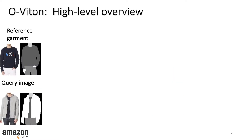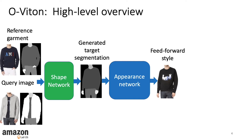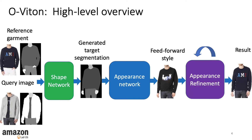Our approach is based on conditional generative adversarial networks. It takes the reference garments and the query image with their corresponding segmentation maps. The shape network takes these inputs and creates a new segmentation map that depicts the query body with the shape of the transferred garment. Next, we feed this into an appearance network and obtain a photo-realistic image. However, for complex patterns, this feed-forward approach is not accurate.